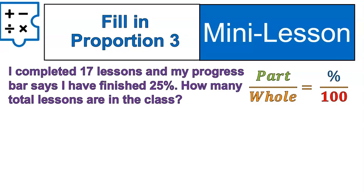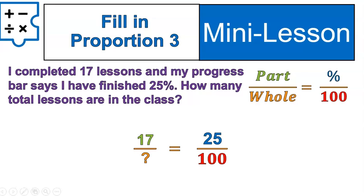Now we're filling in the proportion for a new word problem — the third type. I've completed 17 lessons and my progress bar says I finished 25 percent. How many total lessons are in the class? The part is the number of lessons completed — 17. The whole is the unknown total number of lessons. The percent is 25. When we fill it in, it looks like 17 over the unknown equals 25 over 100.